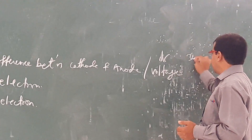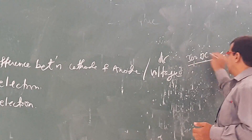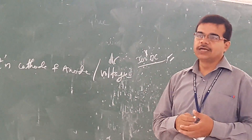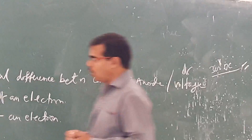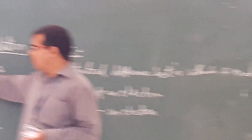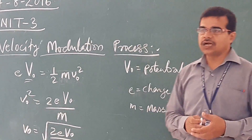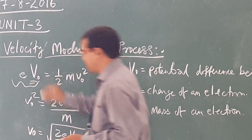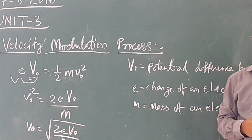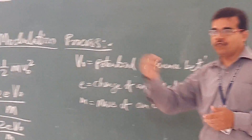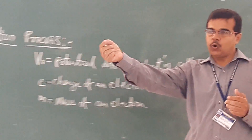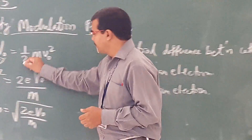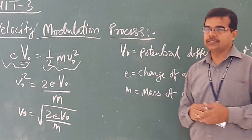Generally, we are keeping it around 300 volts DC. So this is your voltage, and it is multiplied by the charge of the electron. So this gives your potential energy.